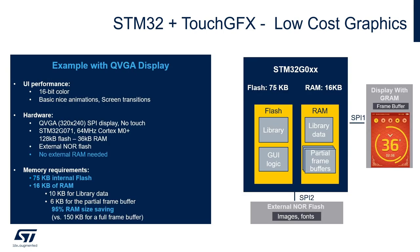Let's take an example with a QVGA display. For UI performance of 16-bit color with basic animation and screen transitions, using a QVGA 320 by 240 SPI display, we can use the STM32-G071 which has a Cortex M0 Plus running up to 64 MHz, up to 128 kilobytes of flash and 36 kilobytes of SRAM. We just need an external NOR and no external RAM is needed. The memory requirements are 75 kilobytes of internal flash and 16 kilobytes for RAM, which includes 10 kilobytes for the library data and 6 kilobytes for the partial frame buffer. This is a 95% RAM size saving compared to 150 kilobytes for a full frame buffer.